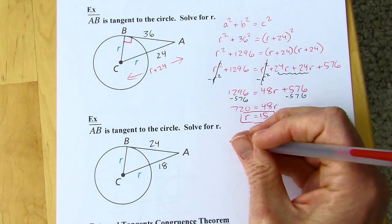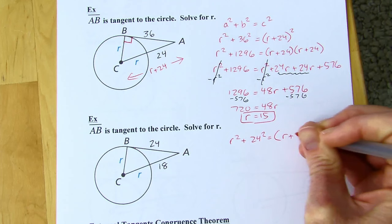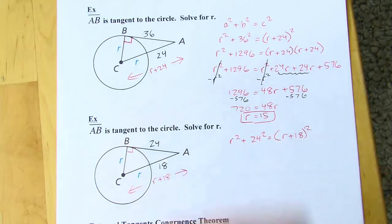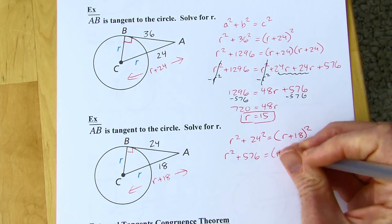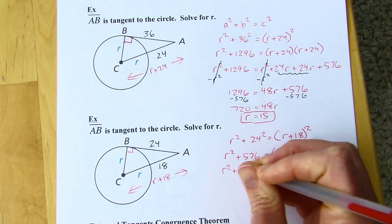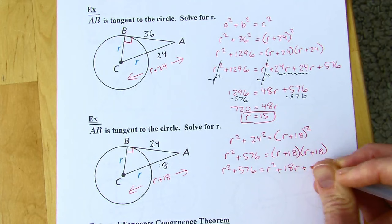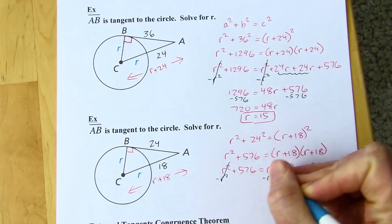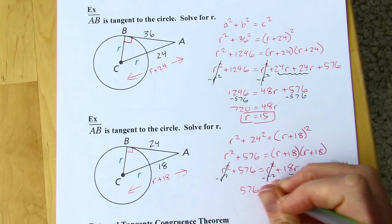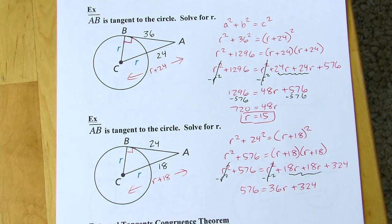Pythagorean theorem again — R + 18 is the hypotenuse. It tells me it's tangent, so I know I've got the right angle. Thinking of (R + 18)² as (R + 18) times (R + 18): outer is 18R, inner is 18R, last is 324. Subtract R² from both sides. Then subtract 324 and divide by 36.